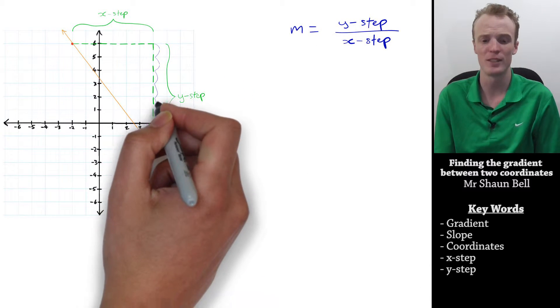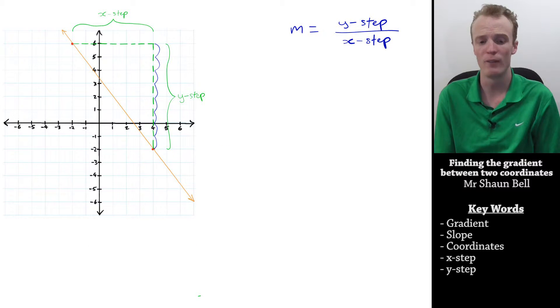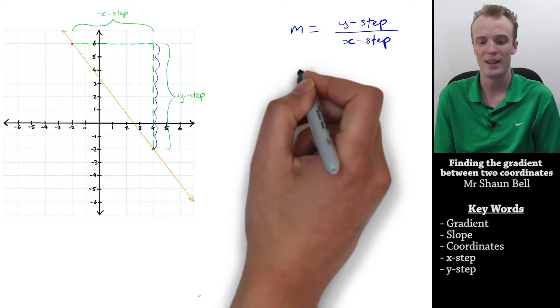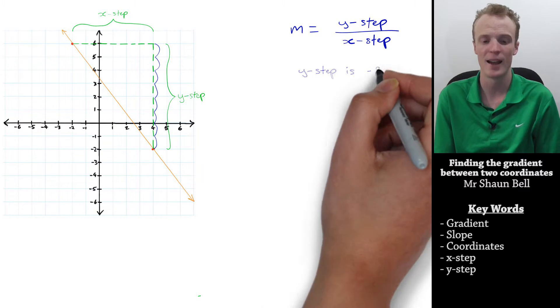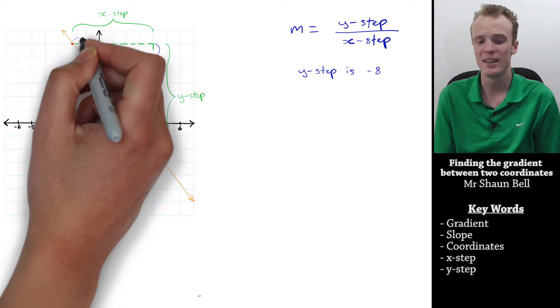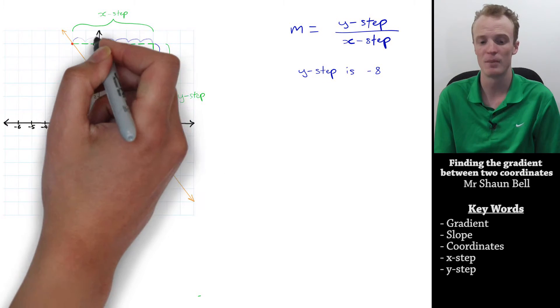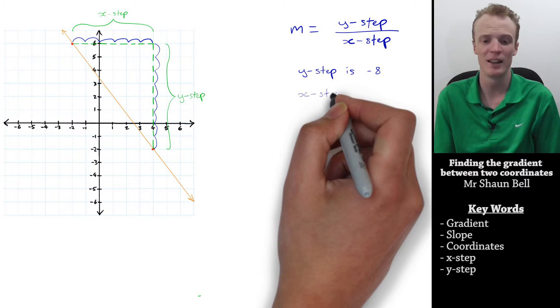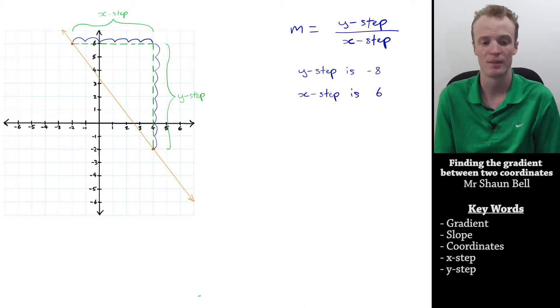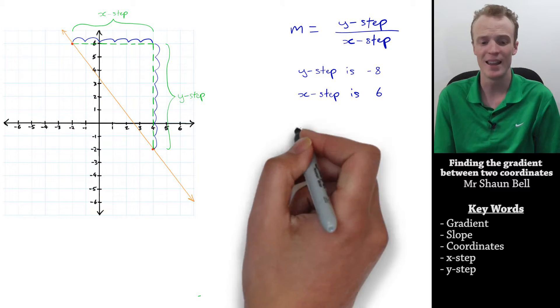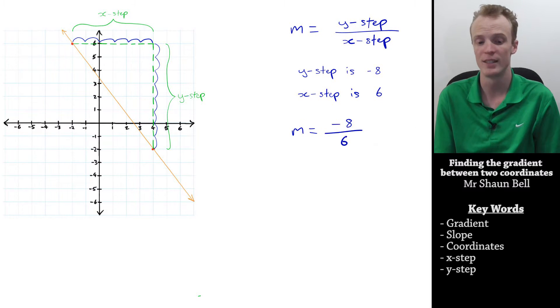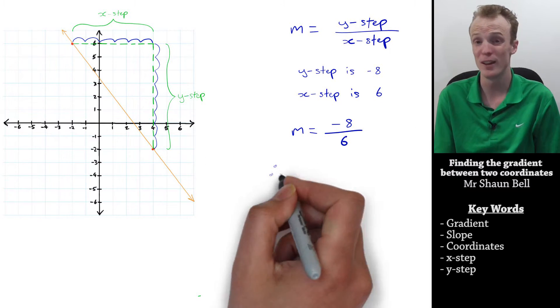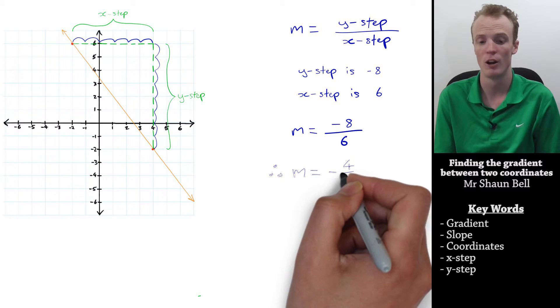And if we count the number of steps in the y direction, we find that we've taken 8 steps. But this time it is down, so we consider this to be a journey of negative 8. The journey in the x direction is 6 steps to the right, so we consider that journey to be positive 6. So the gradient here can actually be described as the fraction negative 8 over 6, which simplifies down to negative 4 over 3.